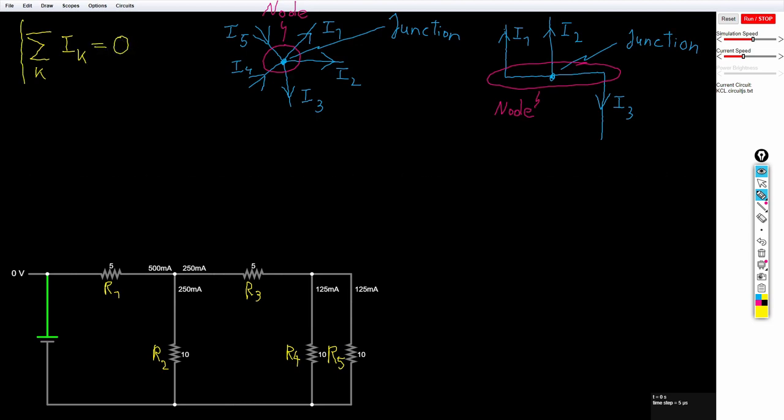To understand his law we have to understand some concepts. The algebraic sum is the sum where we consider the signs of the currents. For example, we would count incoming currents positive and outgoing currents negative.